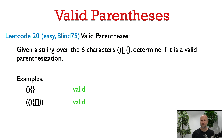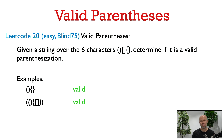Here's another example of a valid parenthesization. This one we can peel like an onion — the first open parenthesis is matched with the last closed parenthesis. After we remove those, we see inside is another valid parenthesization: a concatenation of an opening-closing parenthesis pair on the left, and an open curly bracket followed by an open square bracket, then closing square bracket, closing curly bracket on the right.